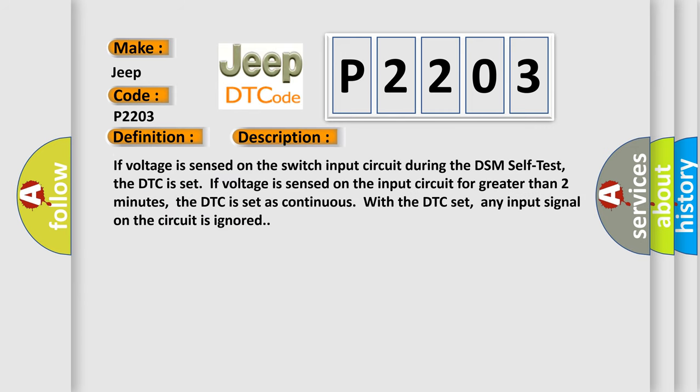If voltage is sensed on the switch input circuit during the DSM self-test, the DTC is set. If voltage is sensed on the input circuit for greater than two minutes, the DTC is set as continuous. With the DTC set, any input signal on the circuit is ignored.